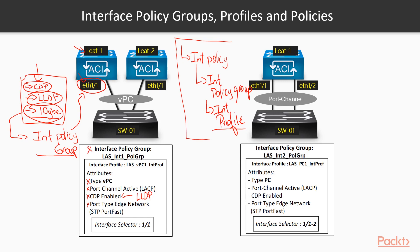We have an interface policy group called LAS — LAS stands for Las Vegas. Let's imagine we have our data center in Las Vegas, so we're labeling it as LAS_interface_one_policy_group. Inside this policy group, we want to make this interface part of a VPC, or virtual port channel, which is on the Nexus platform.